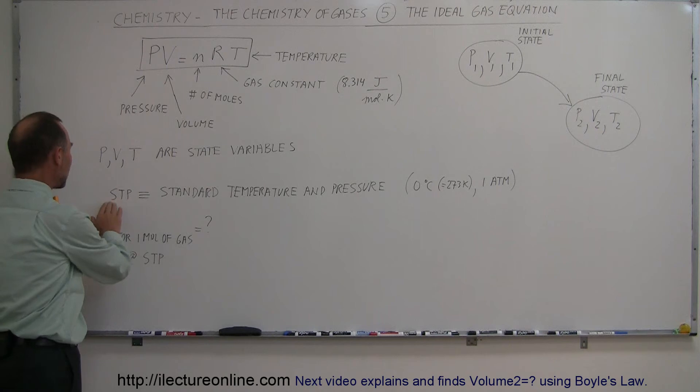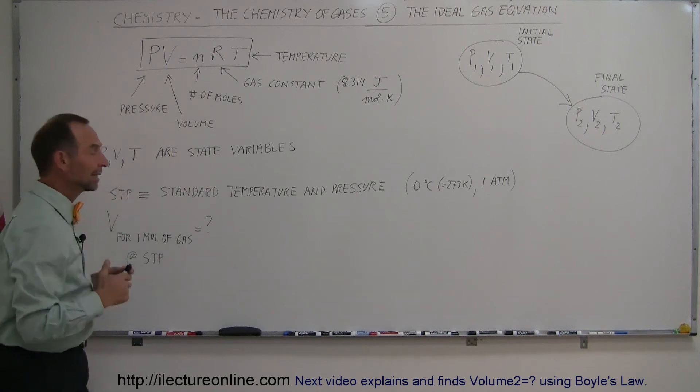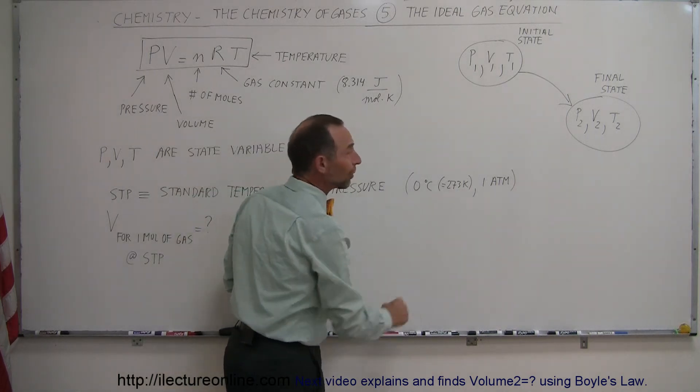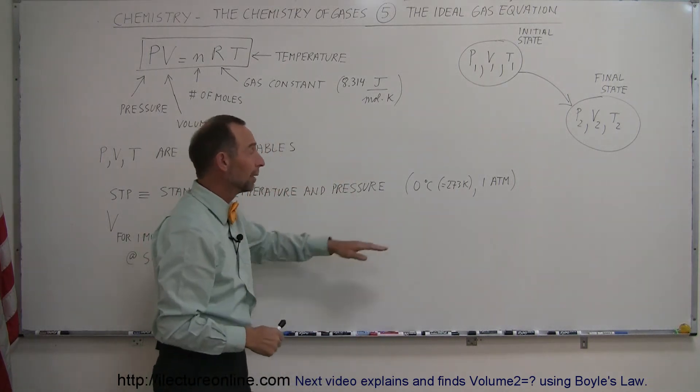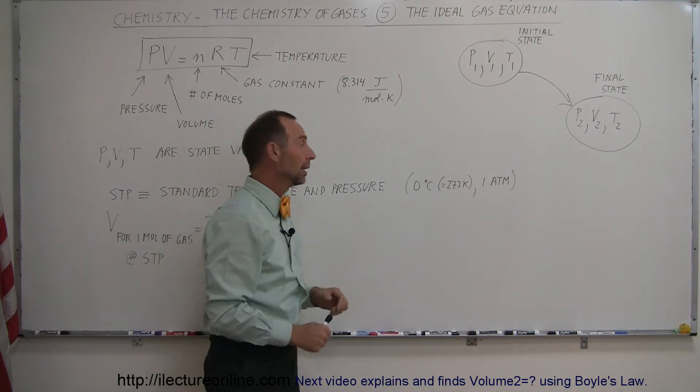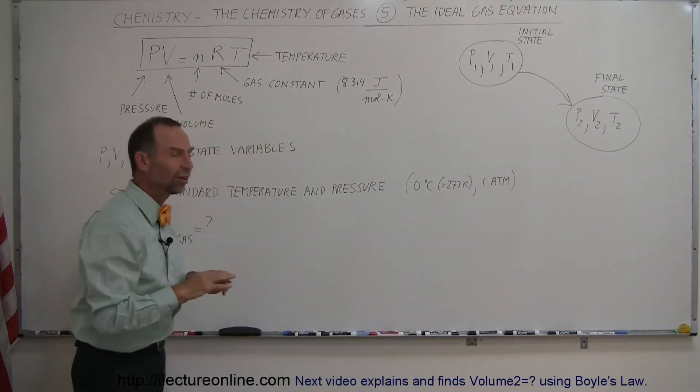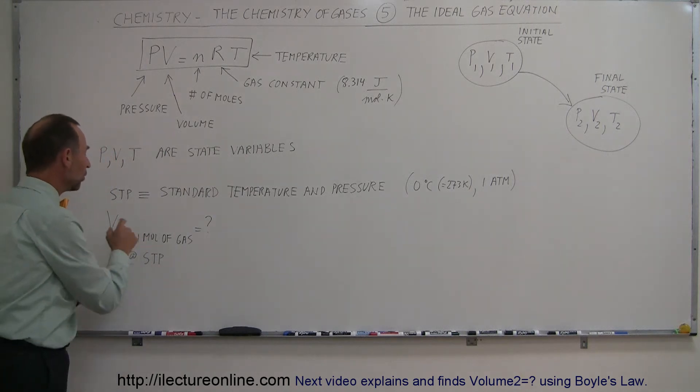STP stands for Standard Temperature and Pressure. In chemistry, Standard Temperature and Pressure is set to zero degrees centigrade, which is the freezing point of water, which is 273 Kelvin, and one atmosphere. So, under those standard conditions, what is the volume that one mole of gas occupies? Now that we have this equation, we can figure it out. We're going to take PV equals nRT,